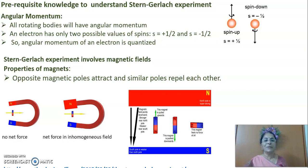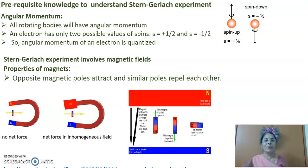We know opposite poles of magnets will attract each other and similar poles will repel each other. Now, the unpaired electron will have spin and hence angular momentum. This will lead to a magnetic moment for the electron. So an electron, a spinning electron, begins to behave like a tiny magnet. In this picture, let us imagine that the electron is represented with the help of a small tiny magnet and it is passing through this magnetic field between the poles of another big magnet.